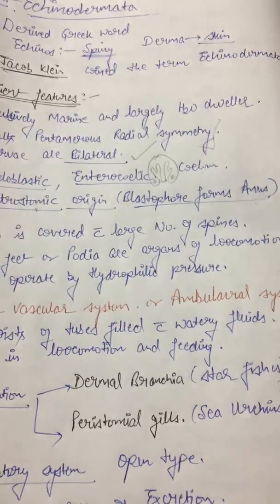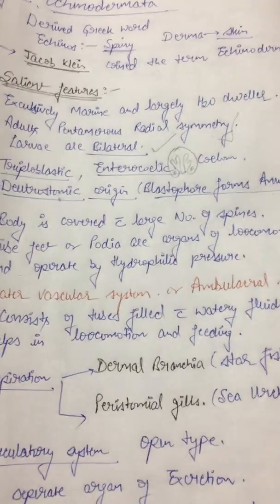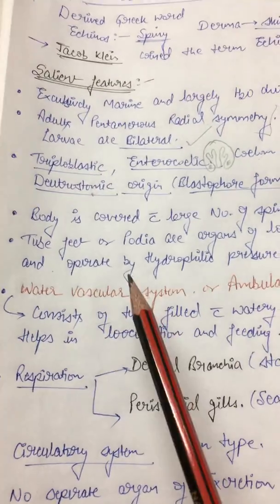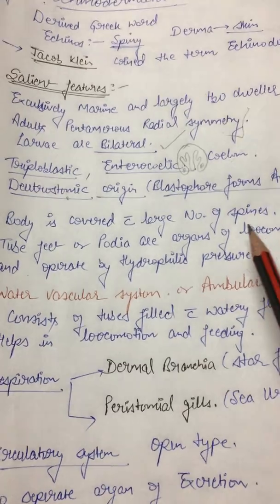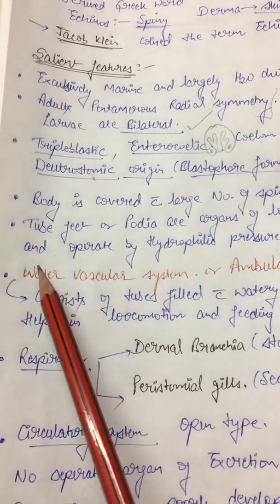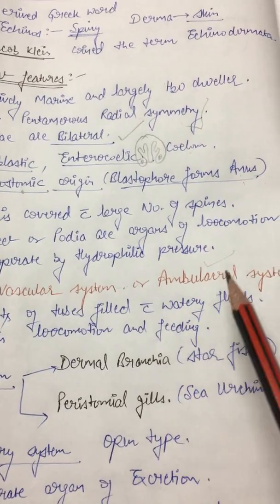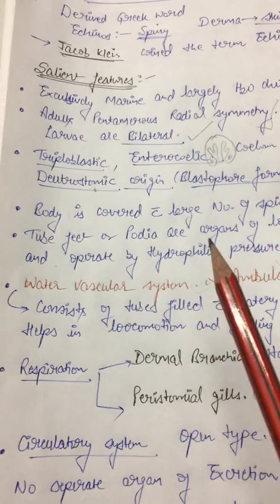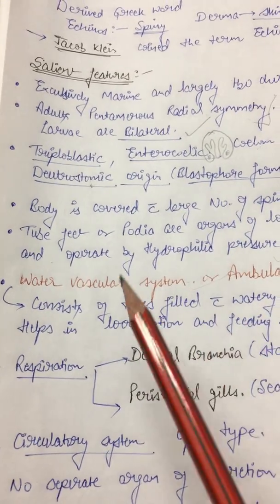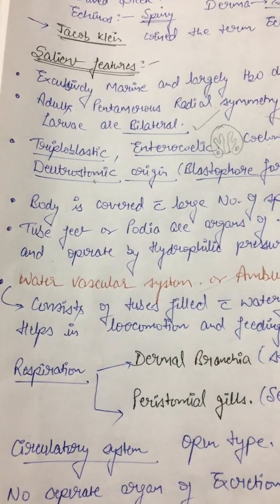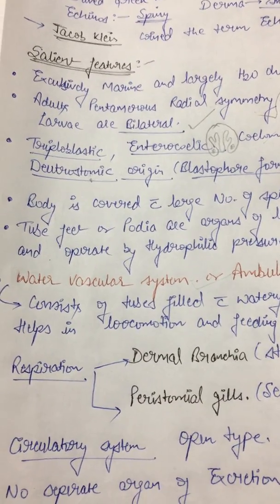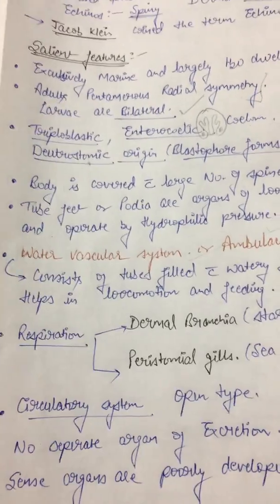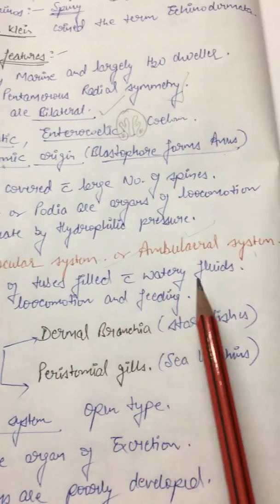The body is covered with a large number of spines, that's why the name is Echinodermata. They have tube feet or podia as the organ of locomotion, which operate by hydrophilic pressure. They have a water vascular system, also known as the ambulacral system. In porifera we have the water canal system, whereas in Echinodermata we have the water vascular system. In 2019, a question came asking to explain the water vascular system of Asterias, which is a starfish. It consists of tubes filled with watery fluid.